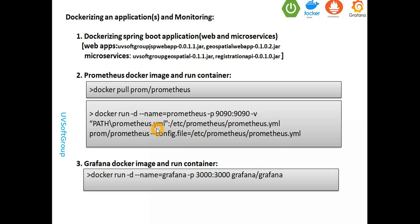Prometheus reads this YAML config file, builds the configuration, and runs the Docker container. You can then see all the metrics information. I'll show you every step — I'm explaining it theoretically at the moment, but I will show you each of these steps in detail, don't worry.